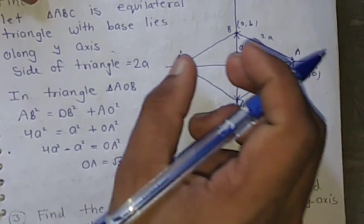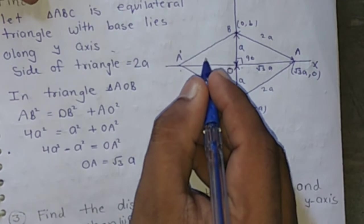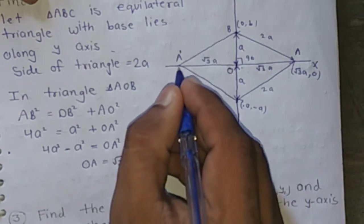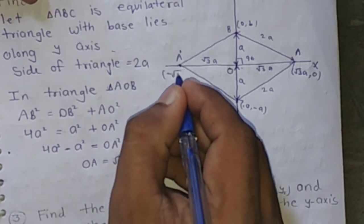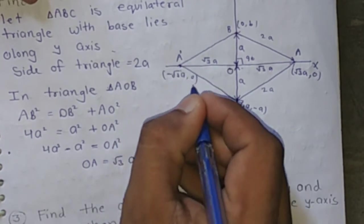Since AO is equal to A'O, the coordinate of A' is (minus root 3a, 0).